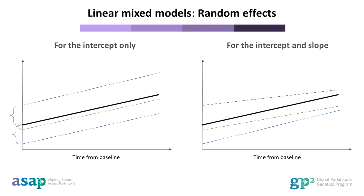With a mixed effects model in a longitudinal study, you can account for variability of an effect, say SNP X, between individuals. Here, SNP X is the fixed effect and the individual is included as a random effect. In these diagrams, each dotted line represents an individual. There are multiple ways that you can include the random effect. In the left illustration, we can include a random effect term for the intercept only, allowing for variability between individuals around the intercept, where the lines cross the y-axis. In a longitudinal study, this is the baseline measurement. You can see that the lines representing individuals vary around the mean intercept, which is a solid black line, but the slope is the same for all lines. In this example, we would be saying that SNP X has the same effect on the rate of progression, but individuals vary slightly in their baseline measurements.